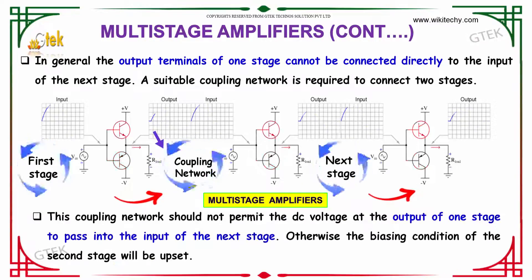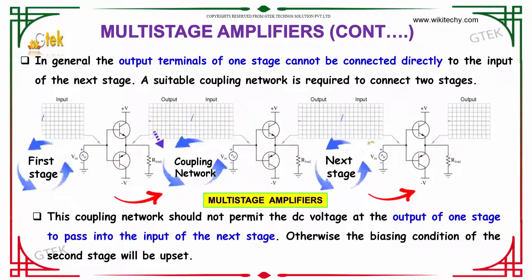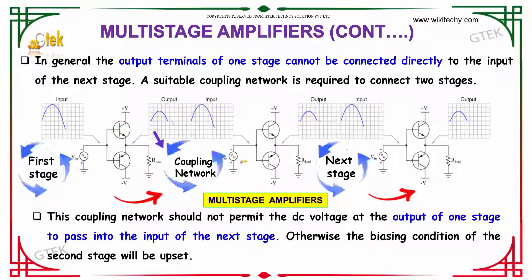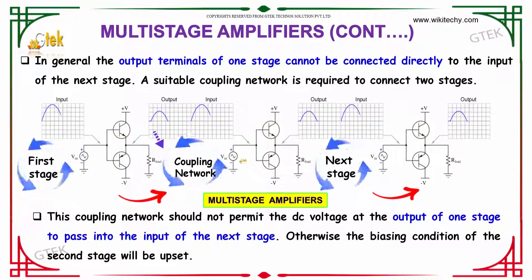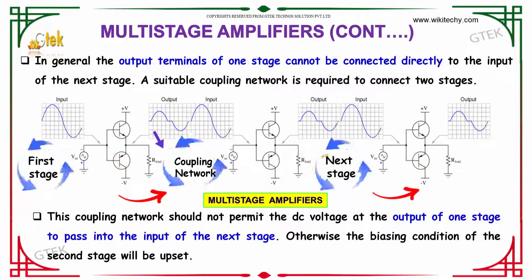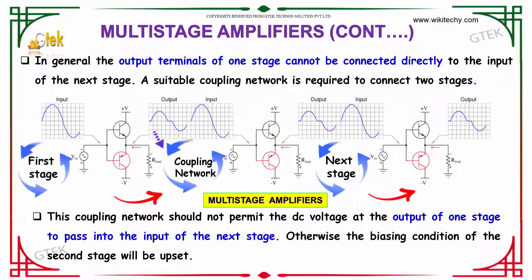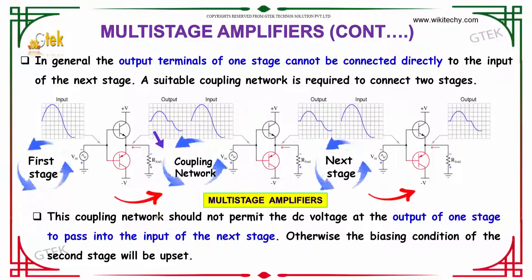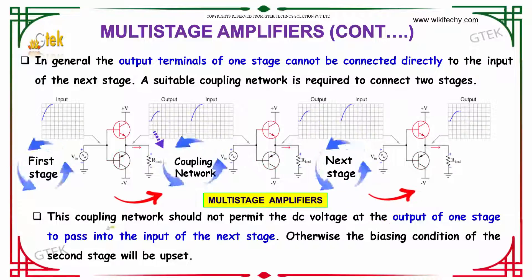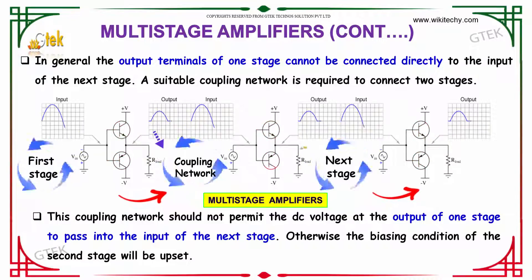In general, the output terminals of one stage cannot be connected directly to the input of the next stage. A suitable coupling network is required to connect two stages. The coupling network should not permit the DC voltage at the output of one stage to pass into the input of the next stage; otherwise, the biasing condition of the second stage will get upset.